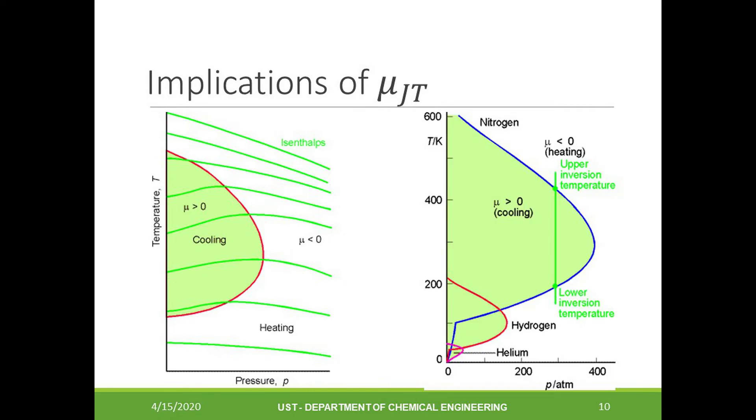At those pressures and temperature conditions outside the shaded region, where the Joule-Thompson coefficient is less than zero, the gas will undergo a temperature increase upon expansion. For a given pressure, there are typically two temperatures at which the Joule-Thompson coefficient can change sign: the upper and the lower inversion temperatures, as shown in the right-hand figure.